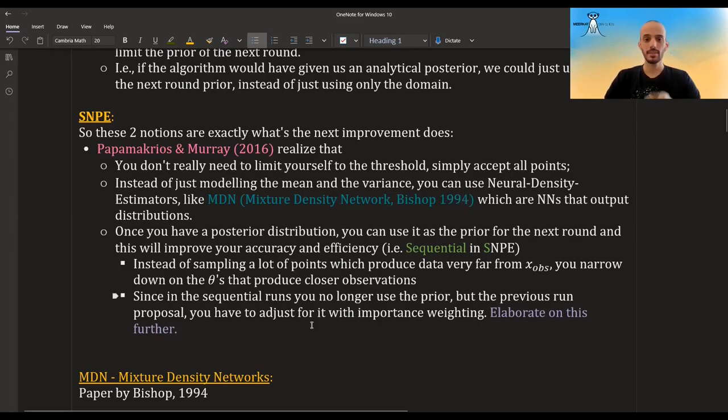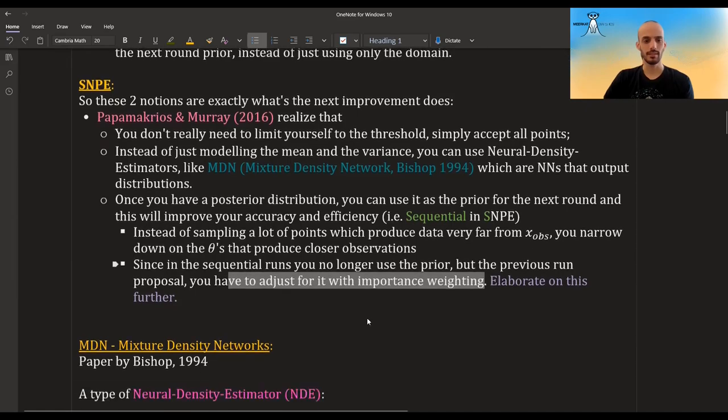Now, once you have this posterior distribution, if you want to improve the accuracy, you can use it sequentially. So you do this algorithm once you've got a posterior, and then you use this posterior as the prior for your next round. And that way you narrow down only on the points that are really close to the actual x observed that you have. And again, since in the sequential runs, you no longer use the actual prior, but you use the previous posterior, then you need some adjustment. We will touch upon this in a second.